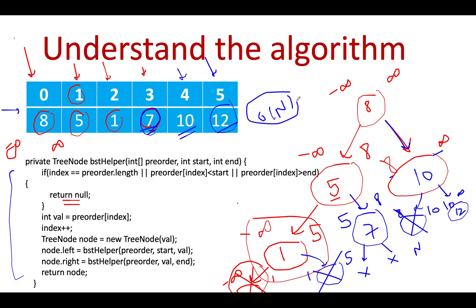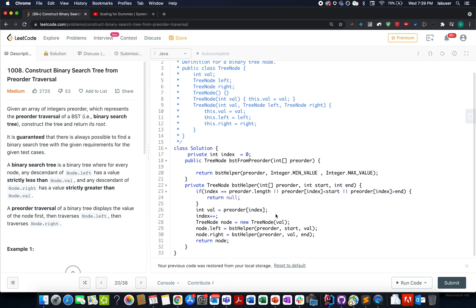Let's start the iteration. I initialized a private variable index that will keep track of the current element into consideration in the preorder traversal. I created a BST helper method. I passed in the preorder traversal, our input array, and two bounds: lower bound and upper bound. We'll call it start and end. You can call it lower or upper, whatever you like.